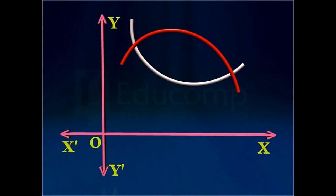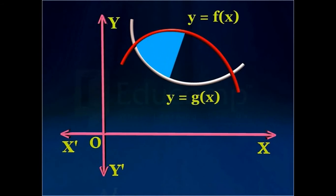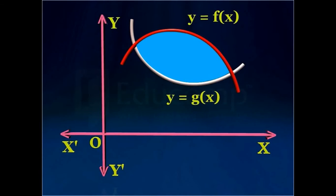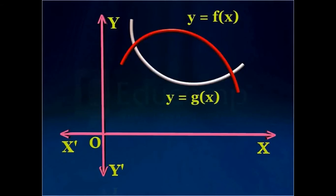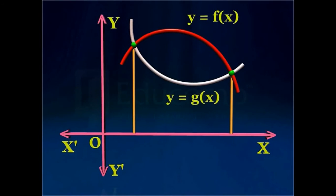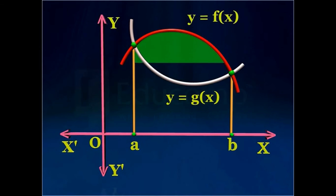Suppose you are given two curves that represent the functions y equal to f of x and y equal to g of x. The curves enclose some area between them, which can be found using the concept of definite integral. First, through the point of intersection of the two curves, draw two vertical lines that intersect the x-axis at two distinct points, say a and b.